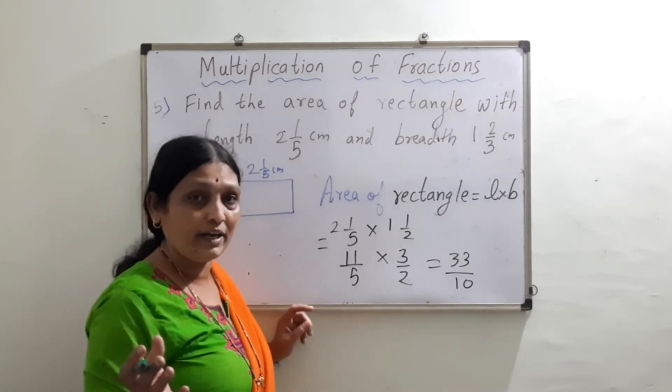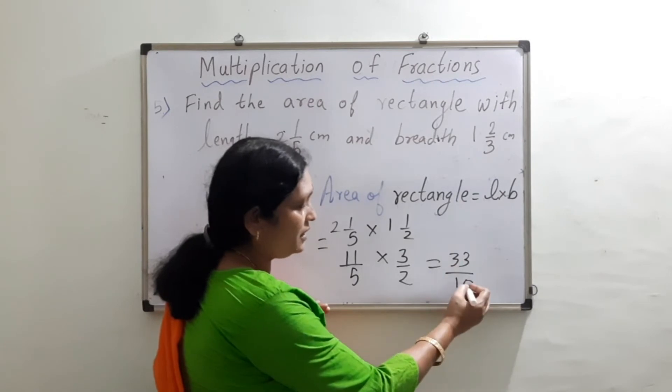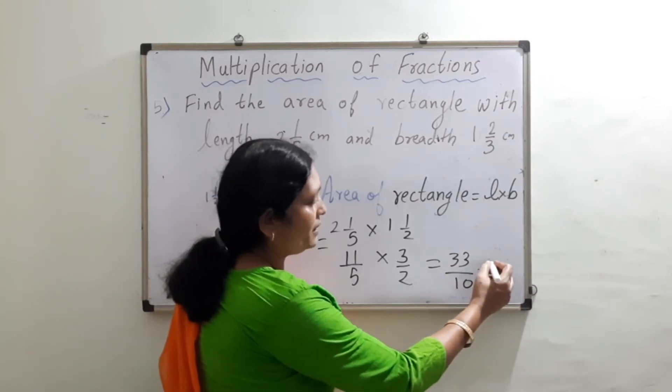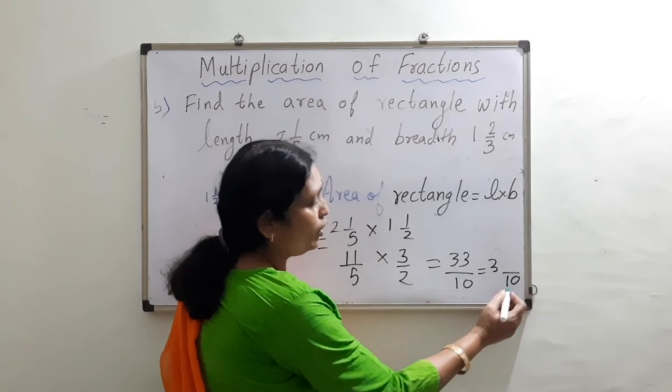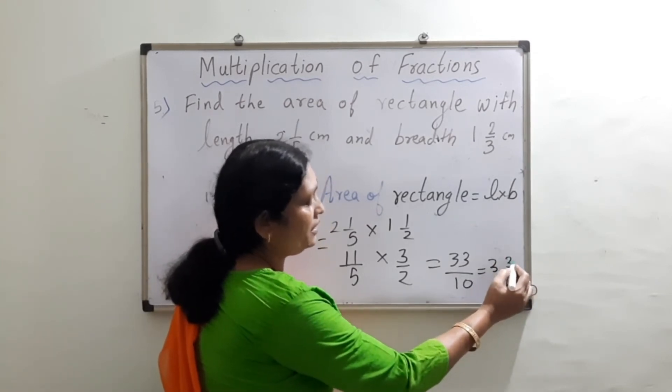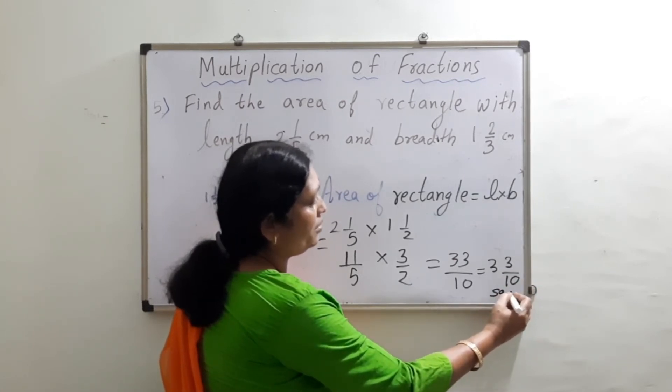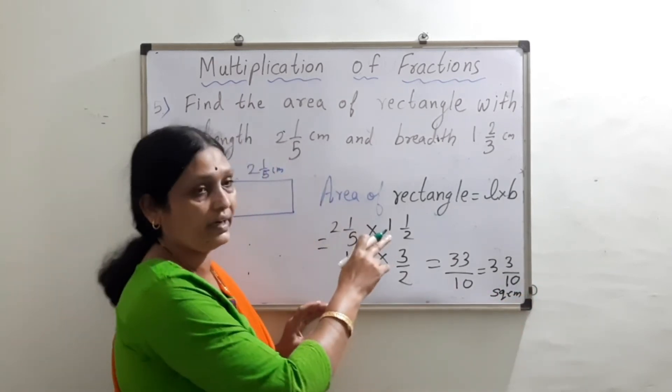Now this is again an improper fraction, so we need to convert this into mixed fraction. If I divide 33 by 10, the whole number that I get is 3. This is always the equivalent of 10. 10 threes are 30, 30 plus 3 is 33. So we get 3 and 3 by 10 square centimeter as the area of this rectangle. Got it, children?